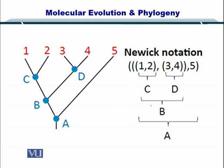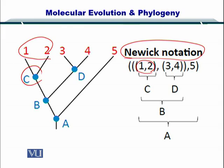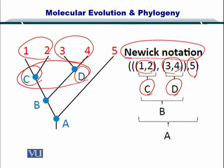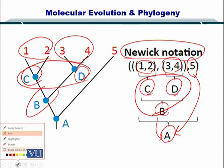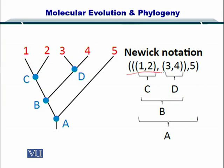Also, if you want to represent this tree in the form of text, then you can use the Newick notation as shown here. So one and two are related by c, three and four are related by d, and five is related to c and d through b. You can utilize this Newick notation as a substitute for this entire tree.